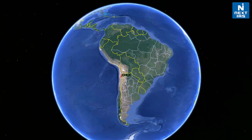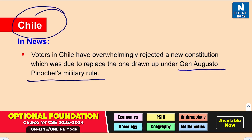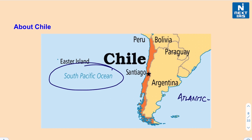Let us move on to our next location: Chile. It was recently in news as voters in Chile rejected a new constitution which was due to replace the older one drawn up during General Augusto Pinochet's military rule. Chile is a country that is part of the continent of South America. Here we have the Pacific Ocean and the Atlantic Ocean. Chile lies on the western front of the South American continent with its capital city Santiago. It is bordered by Peru to the north, Bolivia, and then Argentina.